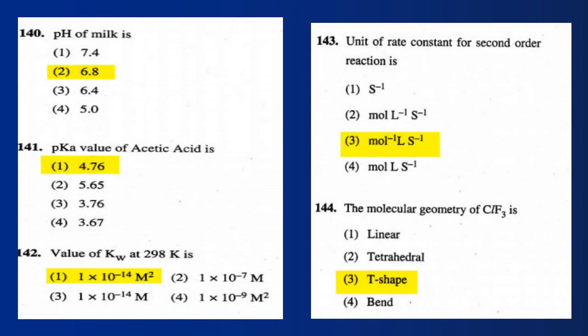Question 140: The pH of milk is 6.8. The pKa value of acetic acid is 4.76. Question 142: The value of Kw at 298 K is 1 × 10⁻¹⁴ M². Question 143: The unit of rate constant for a second-order reaction is mol⁻¹ L s⁻¹.